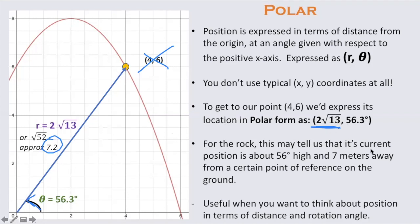So if you think about the rock problem, this may tell us that its current position is about 56 degrees high with respect to the horizontal, and 7 meters away from a certain point of reference on the ground. These polars are useful when you want to think about position in terms of distance and a rotation angle.